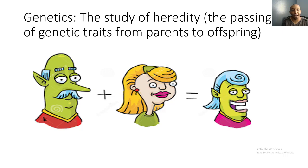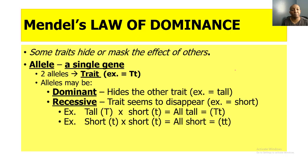We'll be showing how genotypes code for phenotypes, based on Mendel's Law of Dominance, which states that some traits hide or mask the effect of others. An allele is a single gene, and two alleles make a trait. For example, we have a big T and a little t. Alleles may be dominant, meaning they hide other traits — so a capital T would hide a lowercase t, and that individual will be tall.